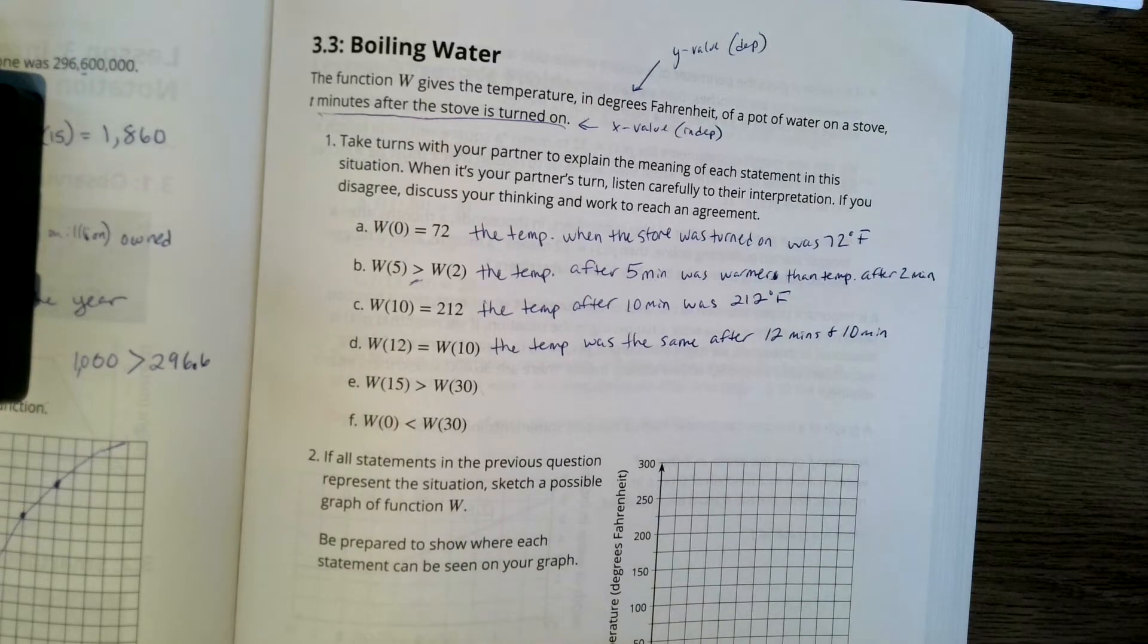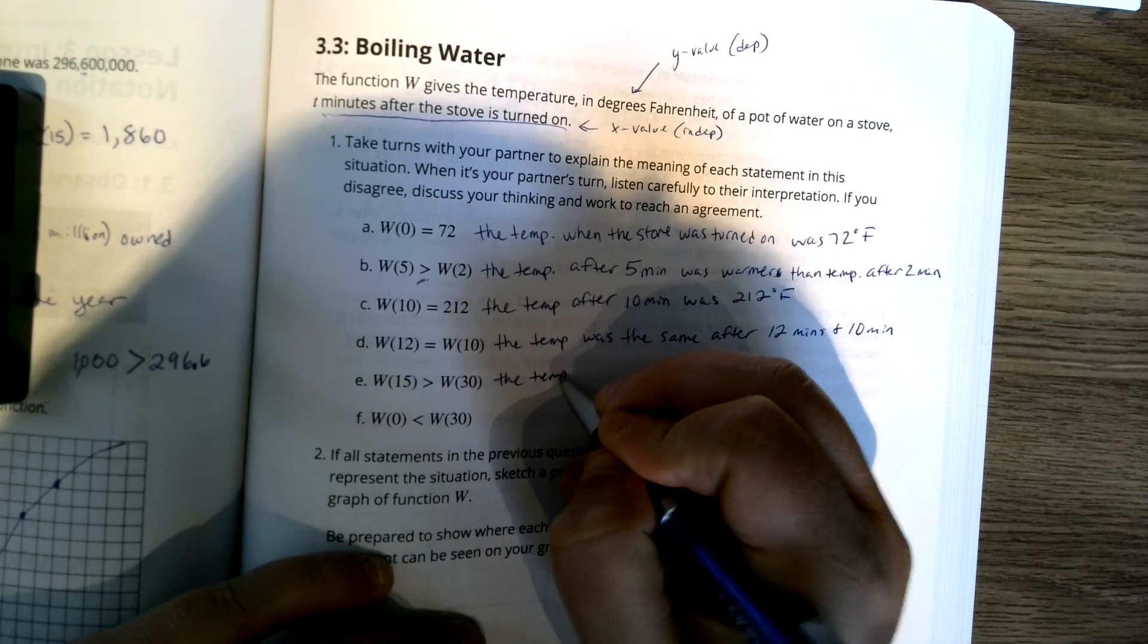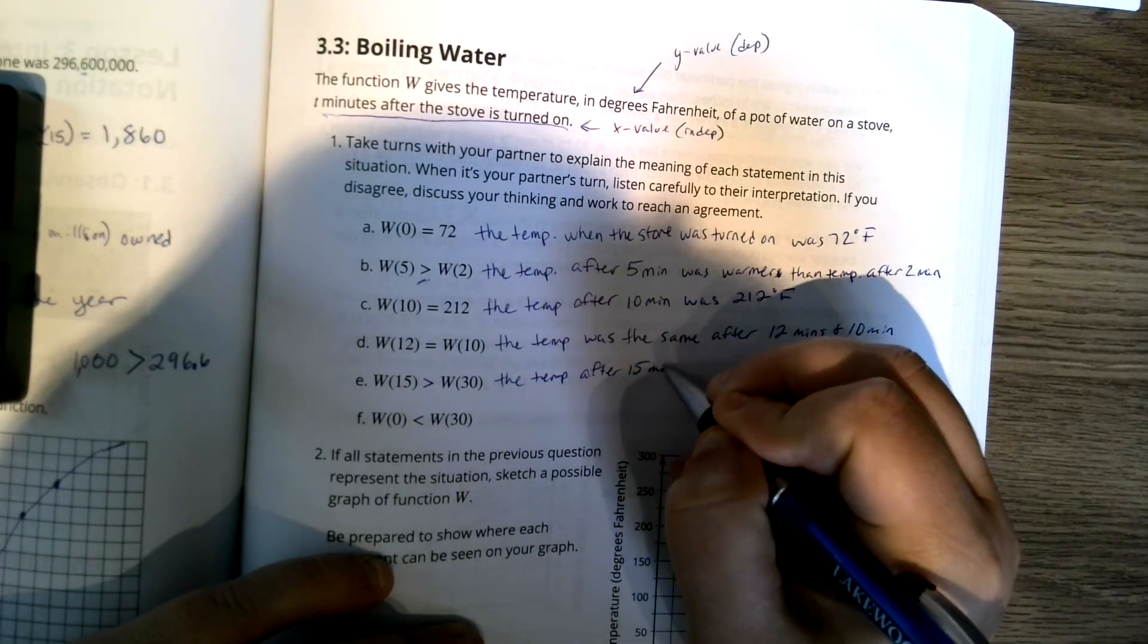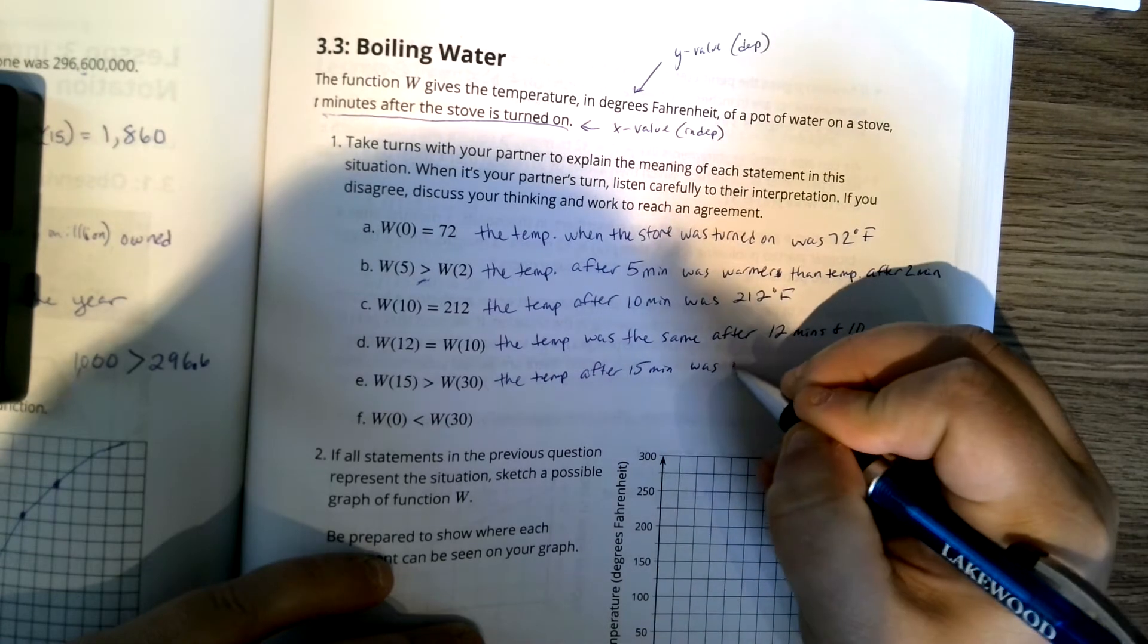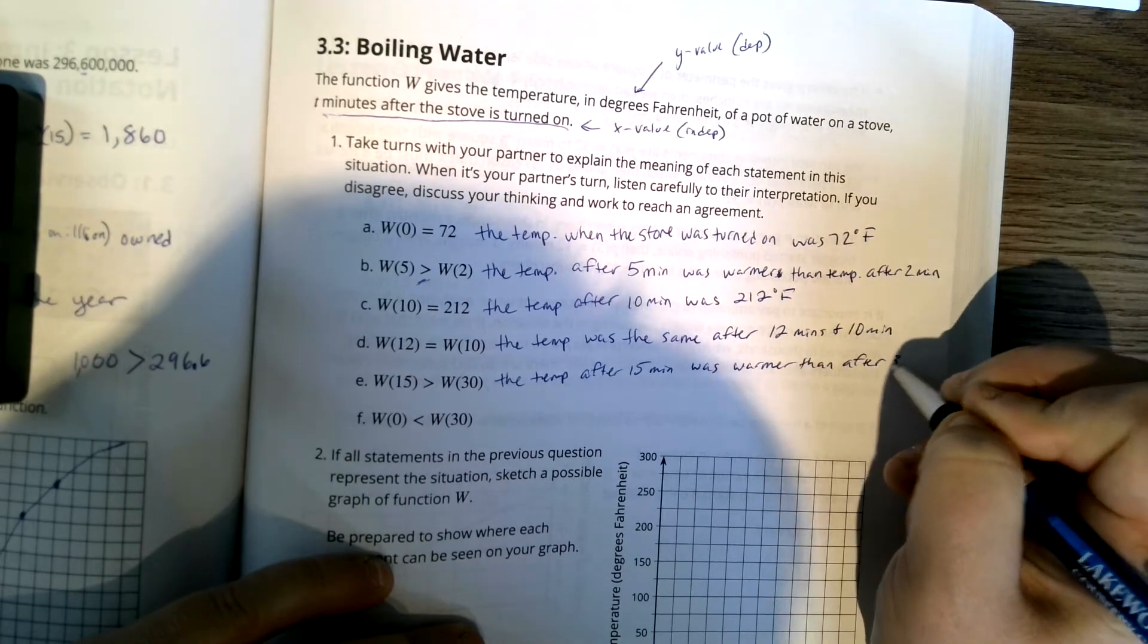W of 15 is greater than W of 30 means the temperature after 15 minutes was warmer than after 30 minutes.